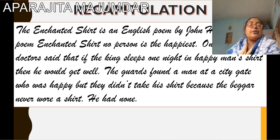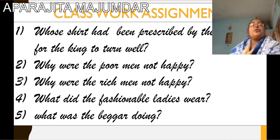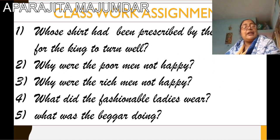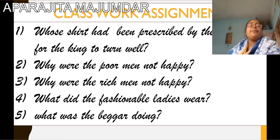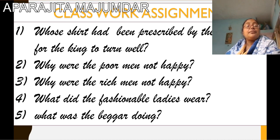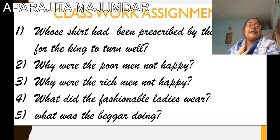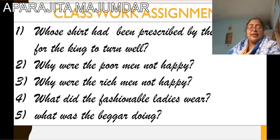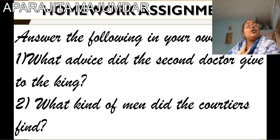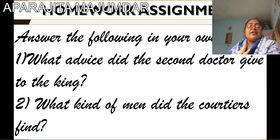Now for your classwork, some questions for you to answer: Whose shirt had been prescribed by the doctor for the king to get well? Why were the poor men not happy? Why were the rich men not happy? What did the fashionable ladies wear? What was the beggar doing? For your homework assignment, answer the following in your own words following my video: What advice did the second doctor give to the king? What kind of men did the courtiers find? The answers are very easy if you follow my video. Thank you, children.